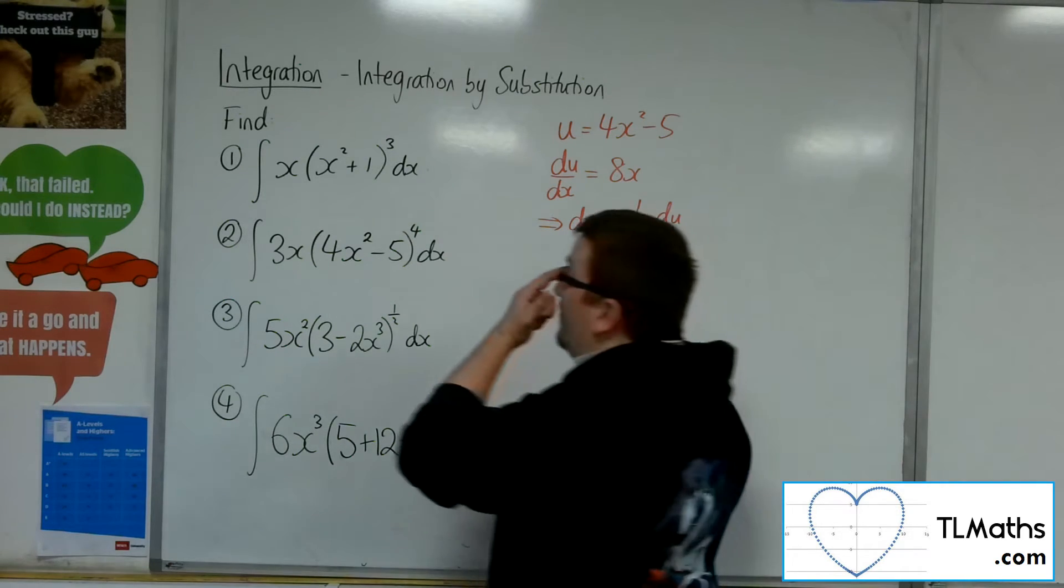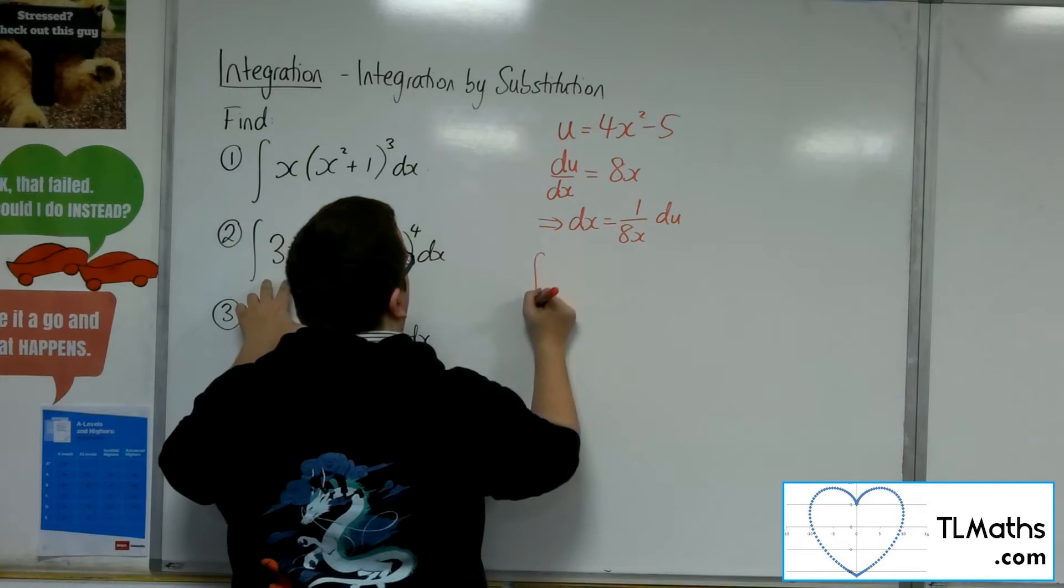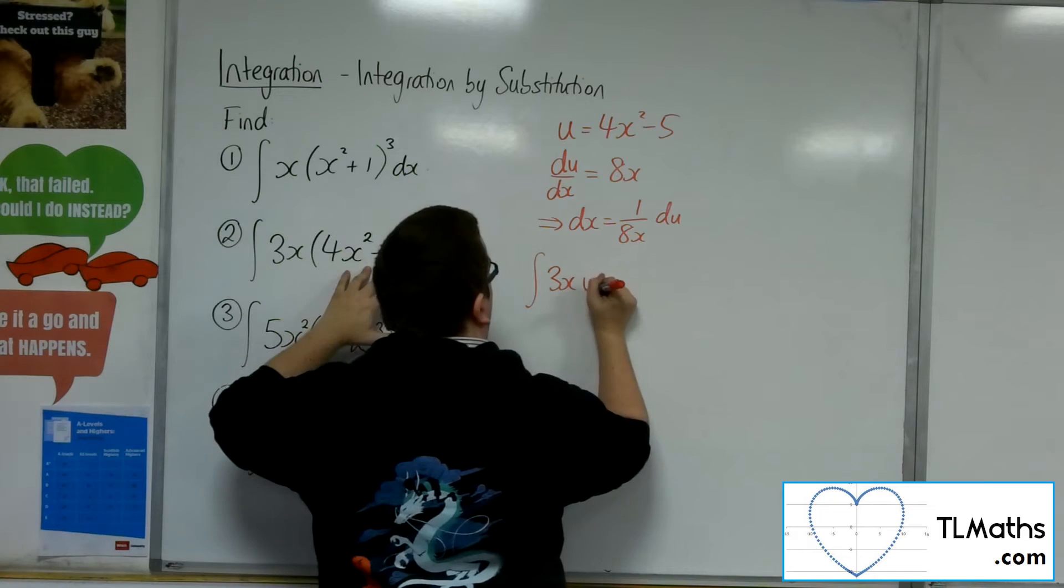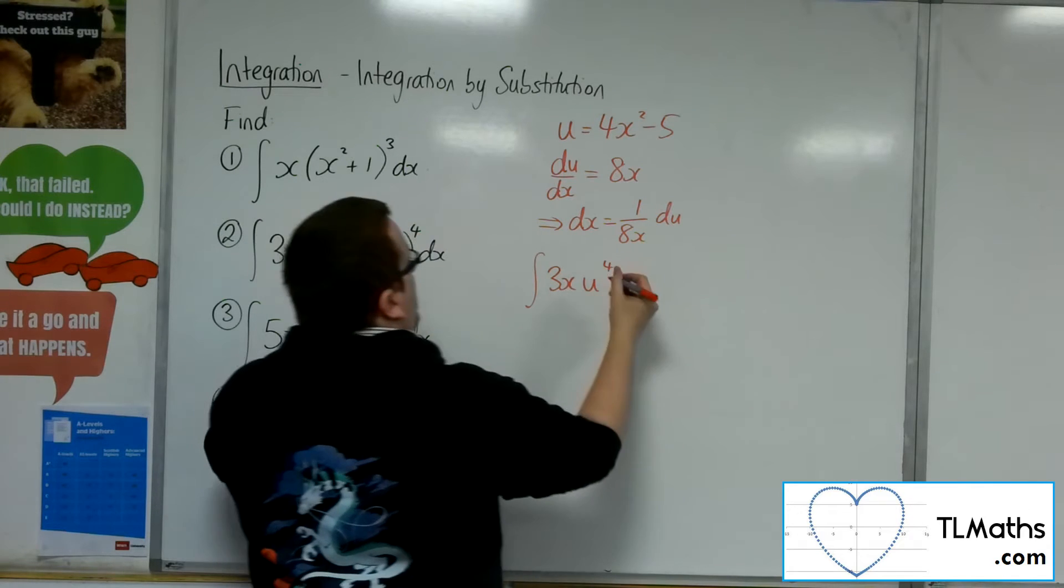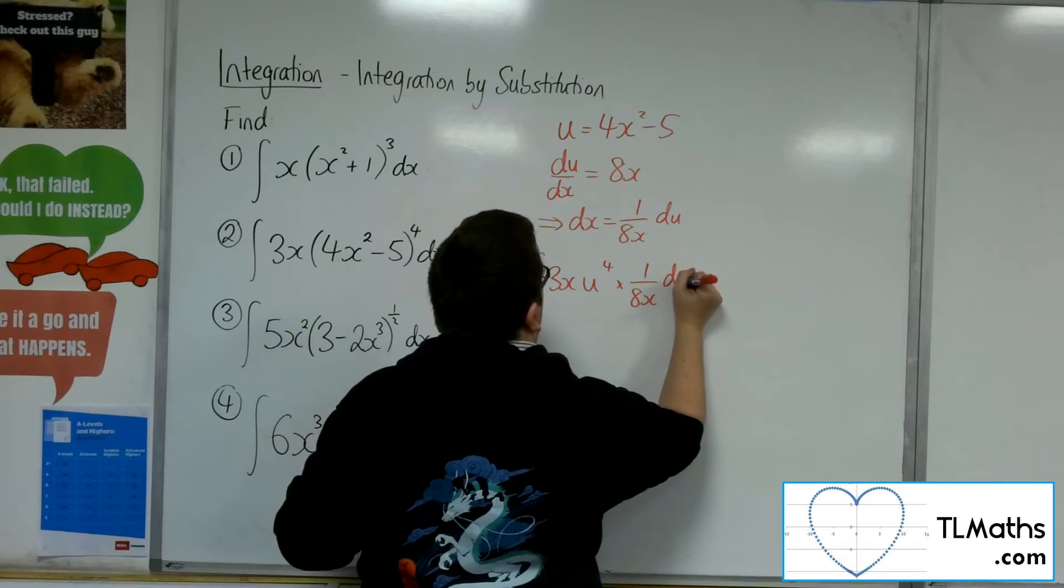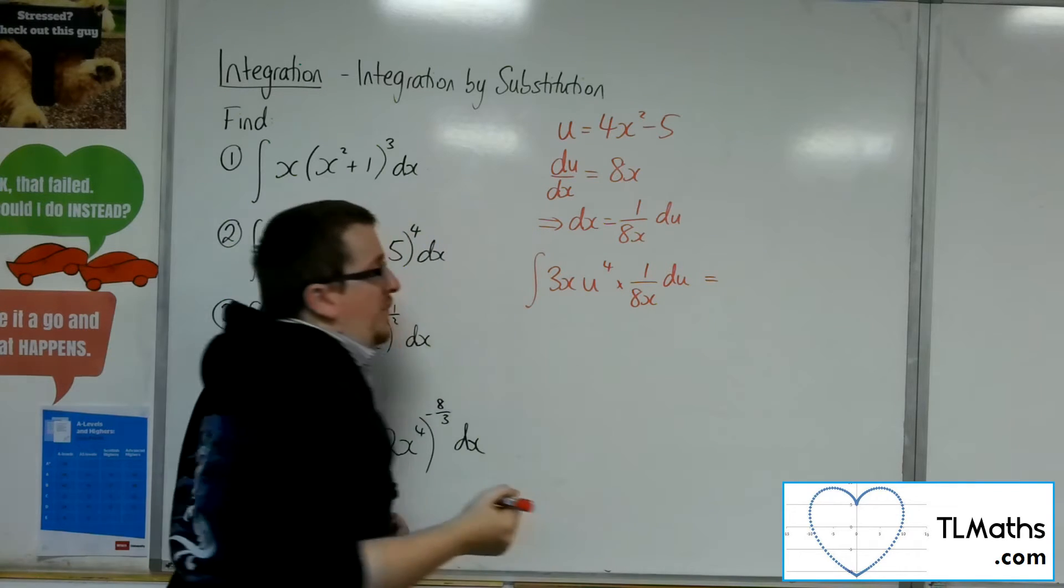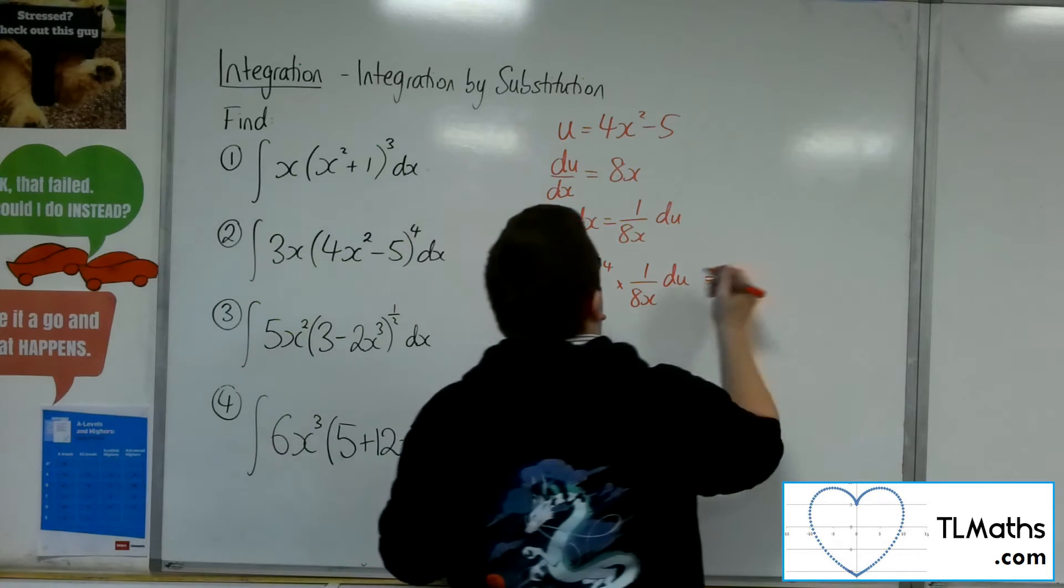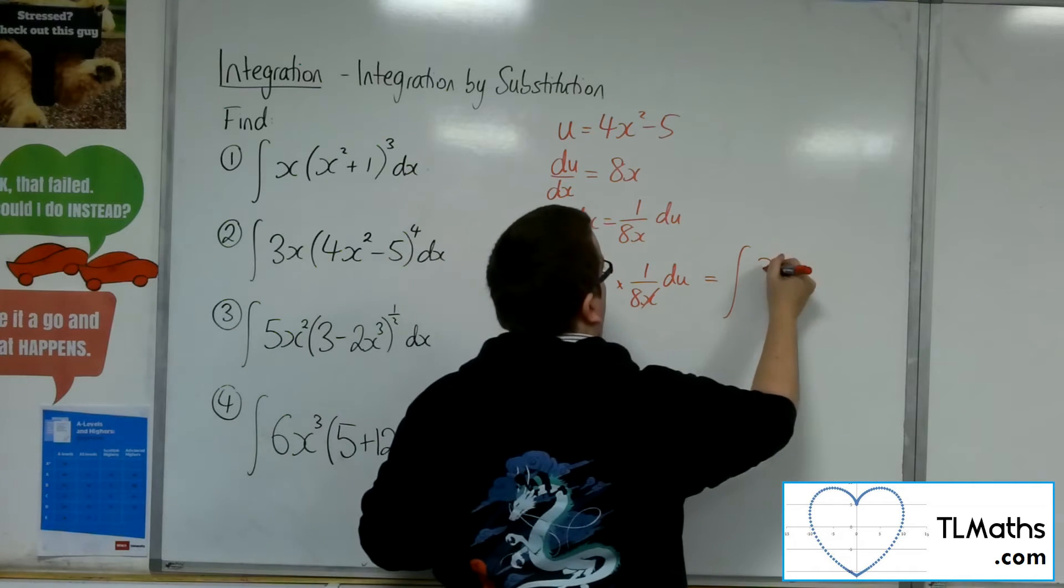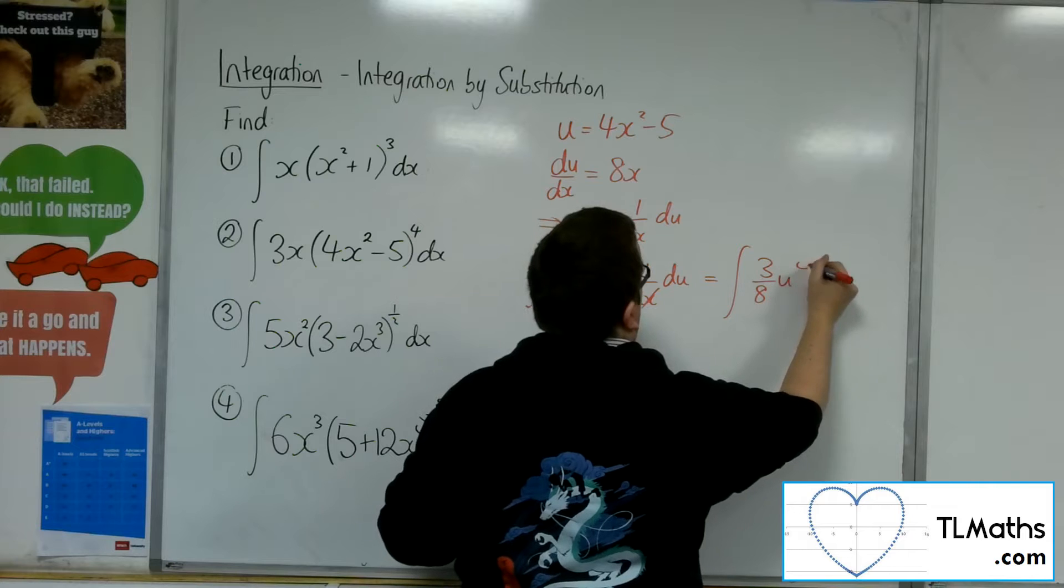Let's see what we've got. So the integral of 3x times u to the power of 4 times 1 over 8x du. Let's tidy that up. The x's cancel. We have the integral of 3 eighths u to the 4 du.